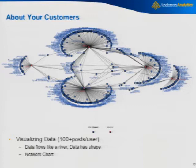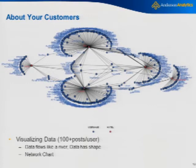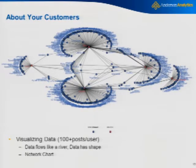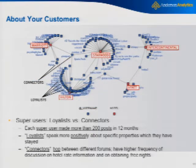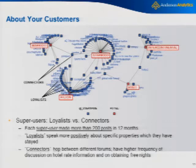Here's another visualization where the blue dots represent actual usernames. On top we have Hilton, underneath Starwood, on the left Hyatt, and on the right Marriott and InterContinental. You can quickly see which boards are most popular by volume. Zooming in on posters with 200 or more posts, these influencers fall into two groups: those more loyal to one brand who tend to be more positive, and connectors who go between boards — more mercenary, talking about how to get the best from different brands.